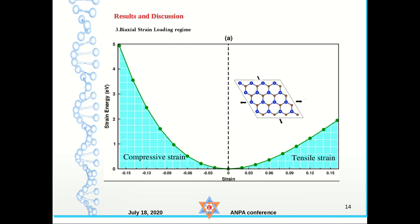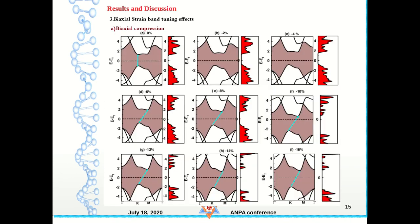Now we go to the main part. This figure explains the biaxial strain loading regime. We apply compressive and tensile strain ranging from minus 16% to plus 16%, and energy is minimum at zero percent strain — the equilibrium state. Investigating the bands, we can see band gap tuning. When compression is applied, the band gap increases, and the direct band gap shifts to an indirect band gap.